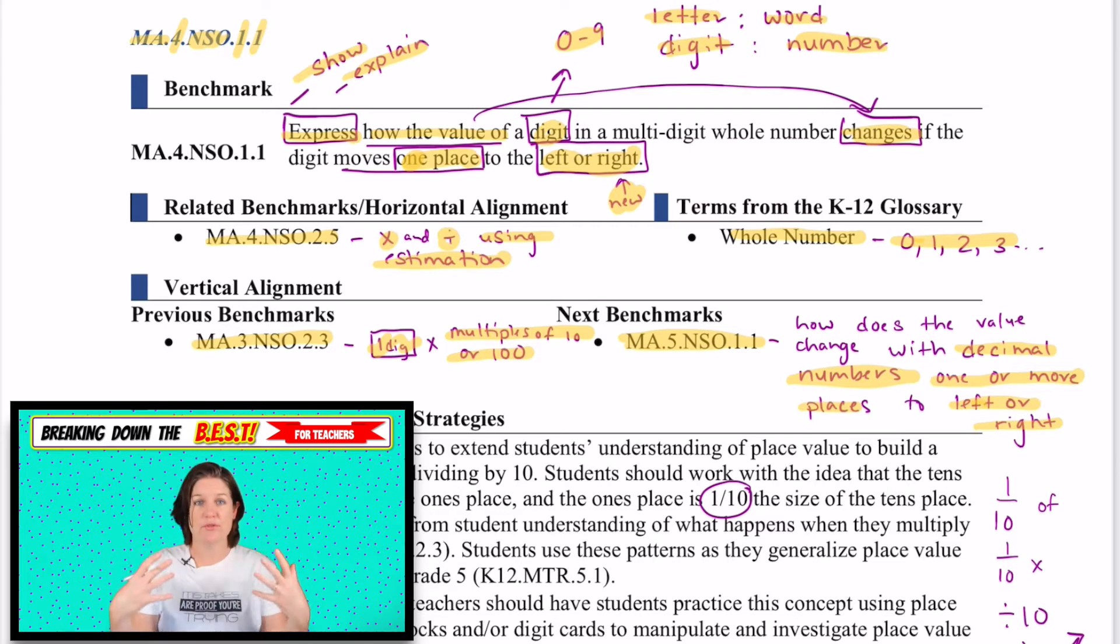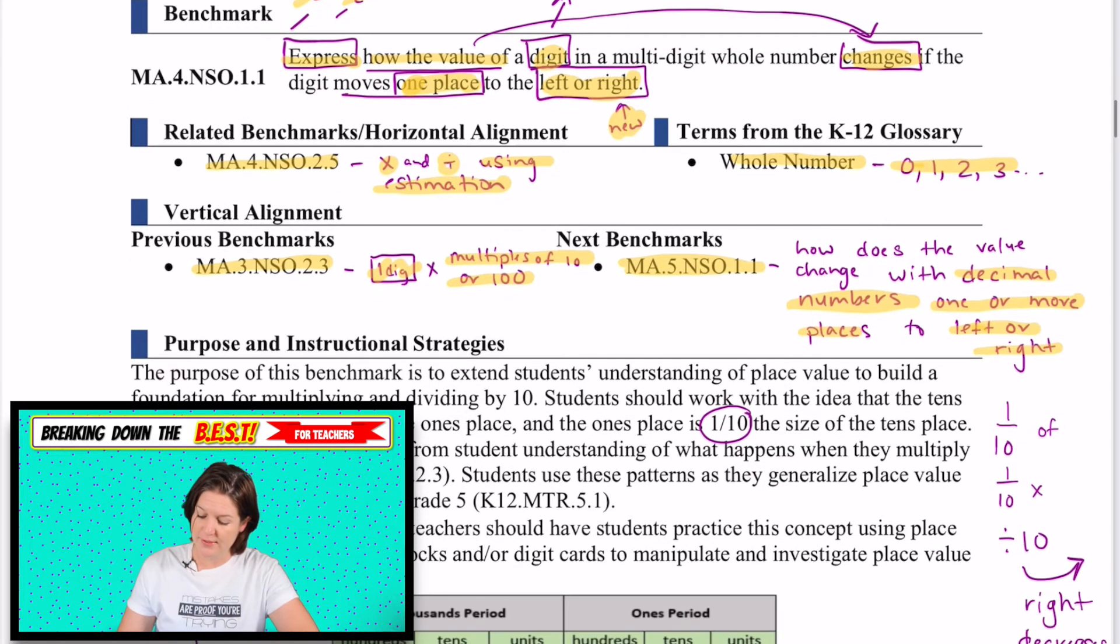In the fifth grade standard, they'll have to go multiple places, maybe 10 times greater, maybe 100 times greater, maybe 1,000 times greater, one or more, and then going the other way, 10 times less, 100 times less, 1,000 times less. That's what fifth grade is going to call for. So right now, our mission is just to have students understand and master moving left or right just one place, which would be 10 times greater or less.